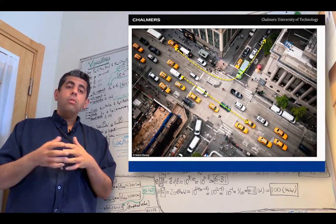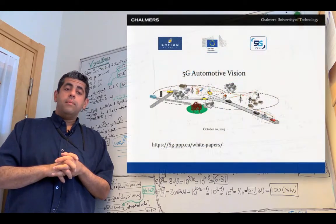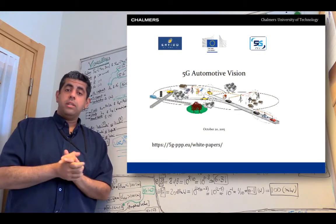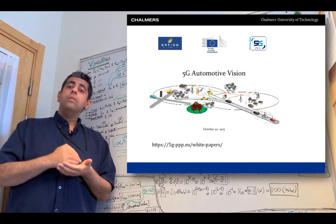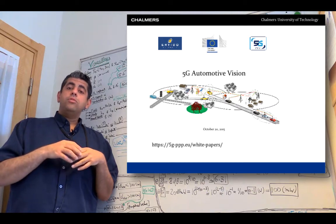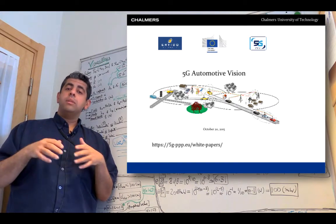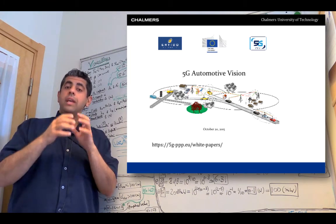The goal that is set by the 5G vision—a document that was created by the European Commission in Europe—is 10 to the minus 5, which means that as you transmit 100,000 packets, in the worst of cases just one of them can fail.